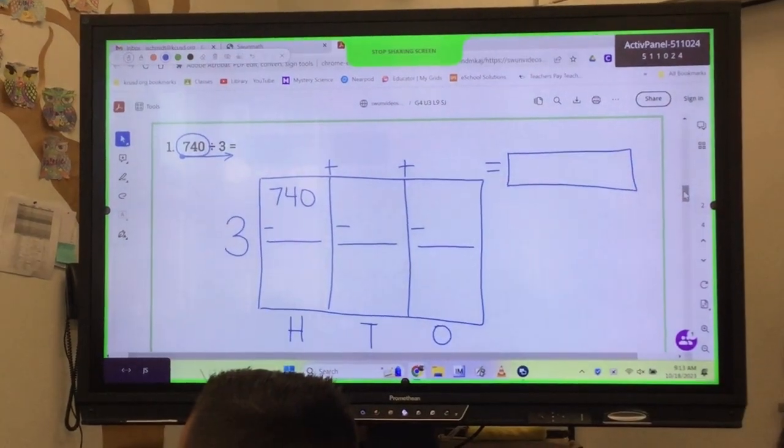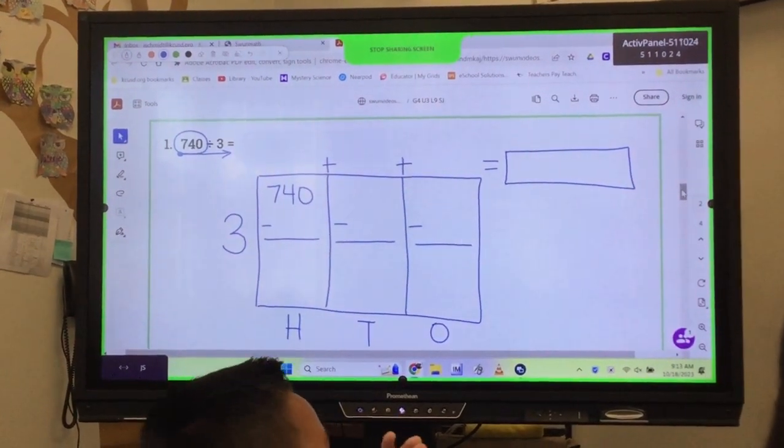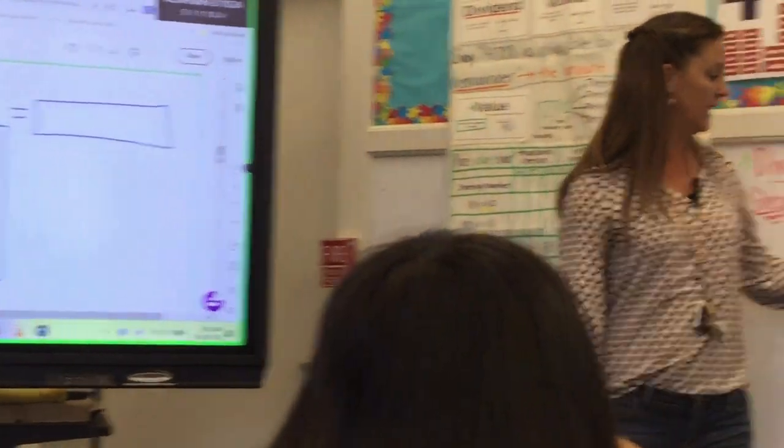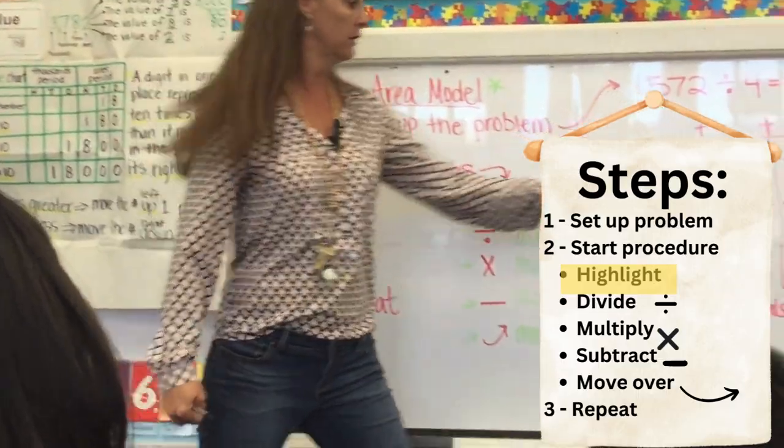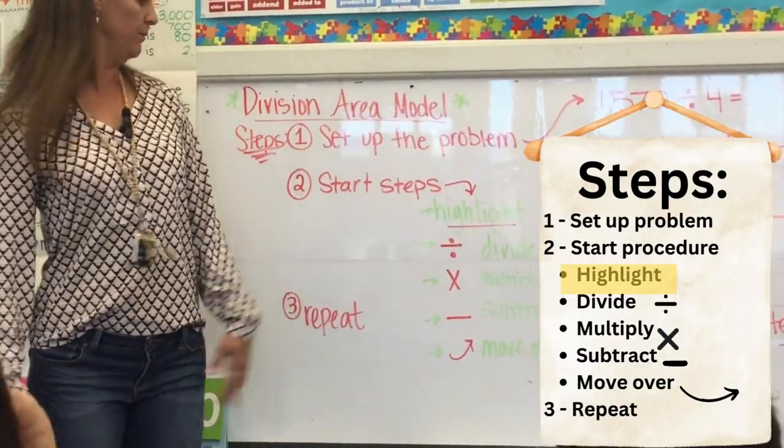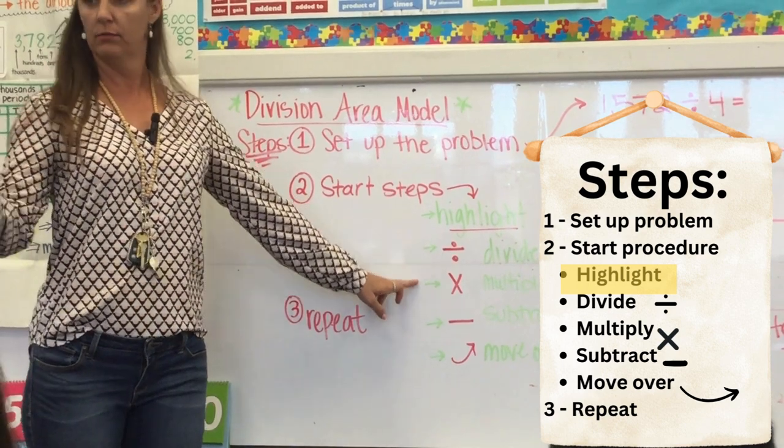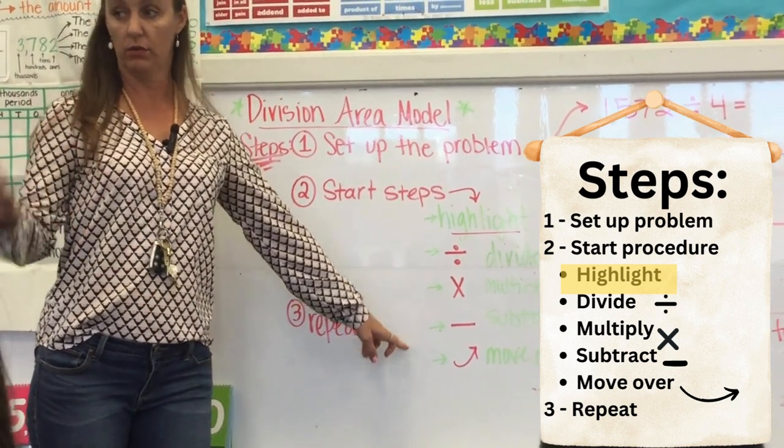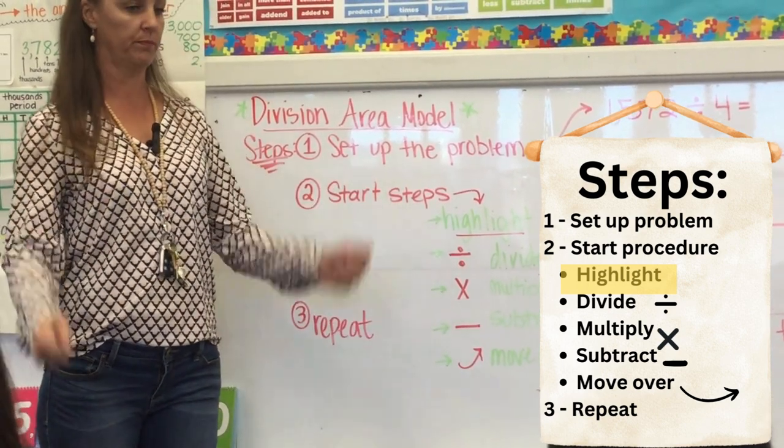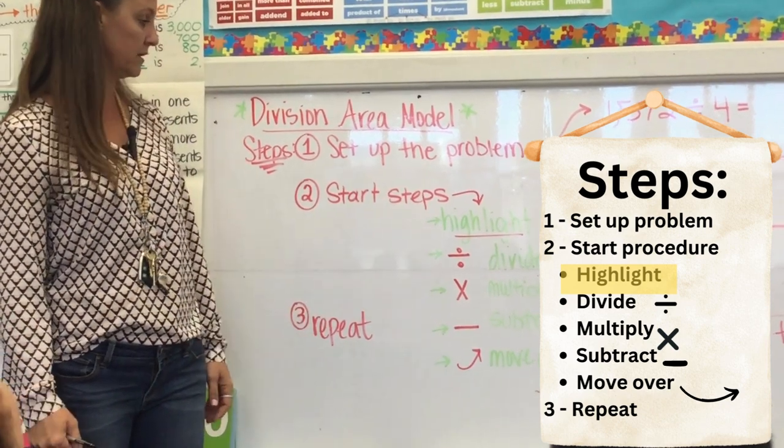Step number two, we're going to start our steps. Right, start our steps. So the way that we do it is we highlight. What do we highlight? The place value, right? And then we divide, multiply, subtract, move over, and then we start again. Okay, so let's just chant that a little bit so we can remember.